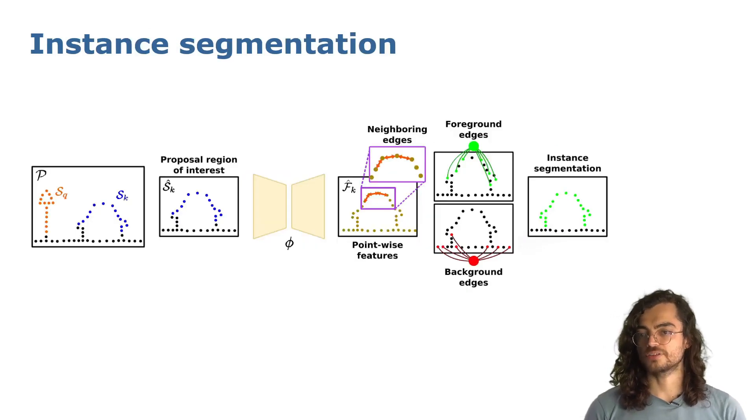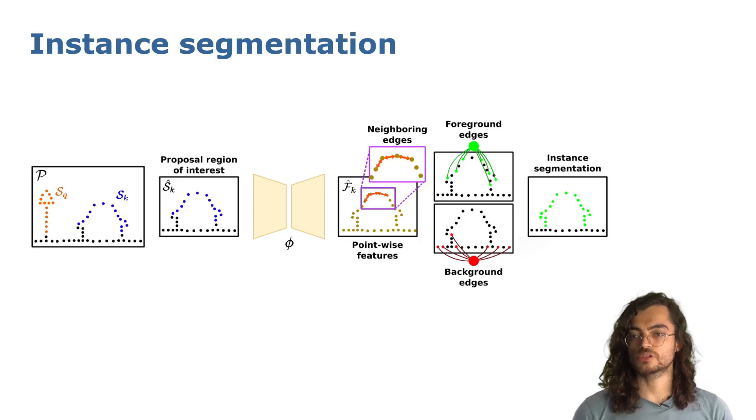After building the graph and sampling foreground and background seeds, we can apply the GraphCut to define the instance from the background, applying this method over all the instance proposals to achieve instance segmentation in the full point cloud.